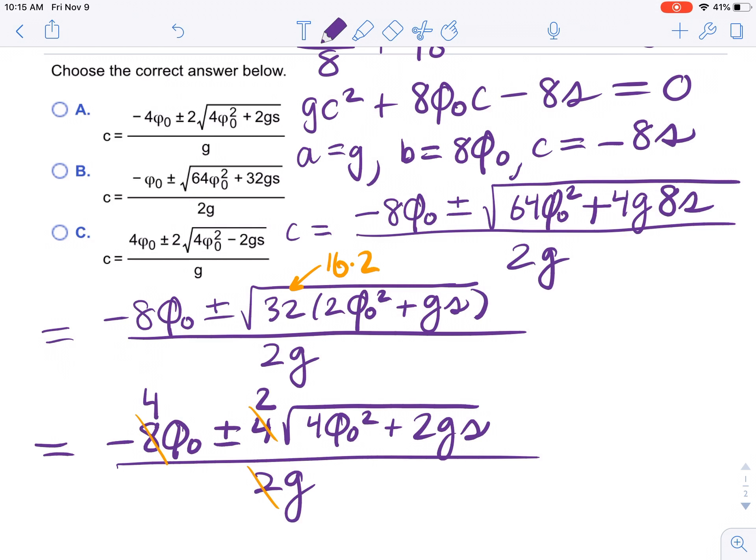So notice that a and c both have a g in the denominator. However, a has the negative 4v sub 0 plus or minus 2, and then the square root is 4v sub 0 squared plus 2gs divided by g. So a is the answer. That's it.